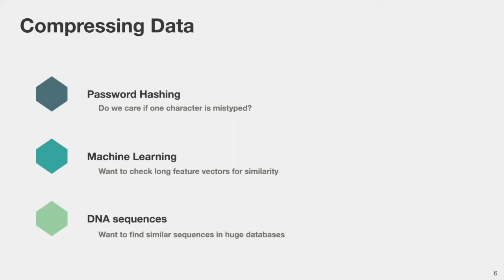All kinds of algorithms for compressing large data items into short digests and then making statements about the original data by just looking at the digest have been studied in algorithms and data structures. But commonly they're studied in a benign environment where the data items are fixed, and then we have some uniformly random coins for sampling the hash function. If the hash function is sampled independently of those inputs, then some correctness guarantees hold. But in cryptography, we would like to have something stronger, where the inputs may be chosen adaptively — the hash function is sampled, then the inputs are chosen, and we would still like to have some correctness guarantees about the statements we make based on the short digests.